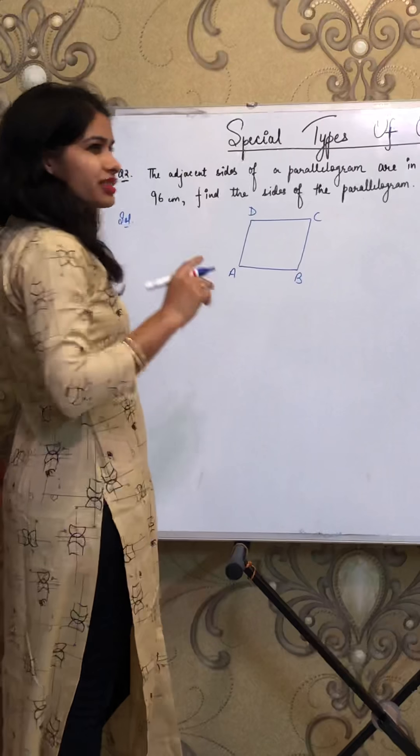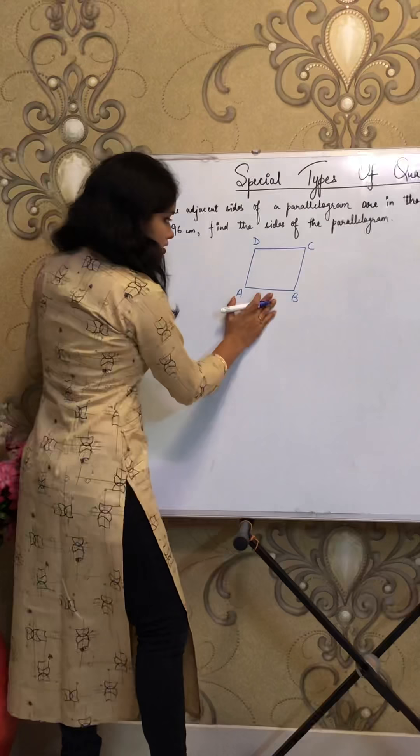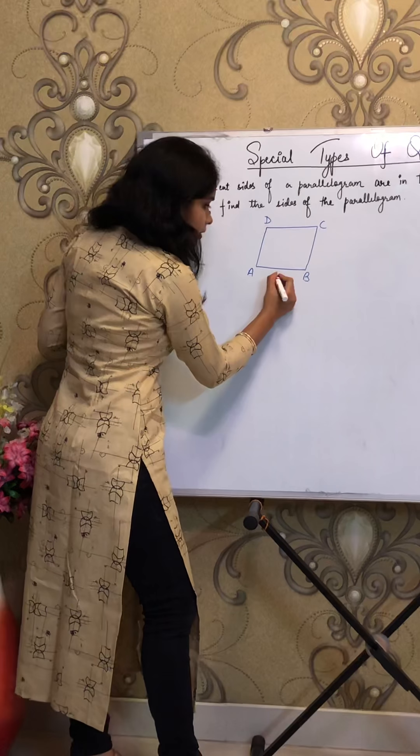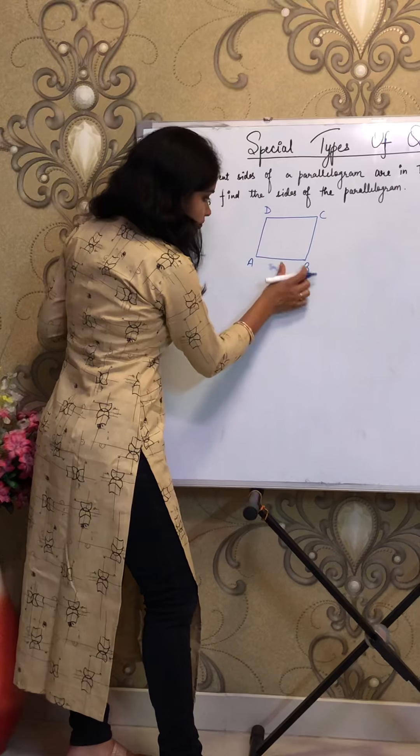Now the adjacent sides - adjacent means the side attached to another side, take one by one. If I am taking AB as the first side...